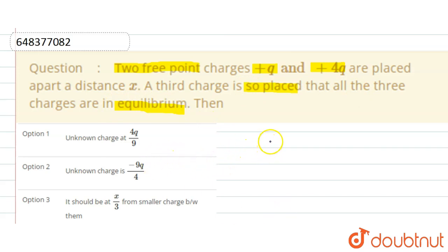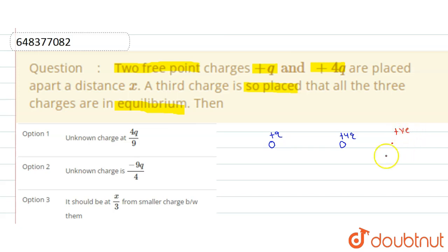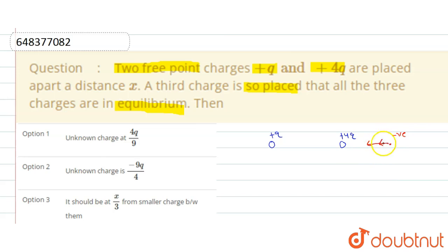Suppose there are two charges present here — this one is +q charge and another is +4q charge. If we consider a point outside the two charges and place a positive charge there, the forces due to both +q and +4q will be along the same direction, so the net force is not zero. Similarly, if it is a negative charge placed outside, the forces due to both charges are again along the same direction, so the net force is not zero. Therefore, we cannot place the third charge outside — either to the left or to the right of the two charges.